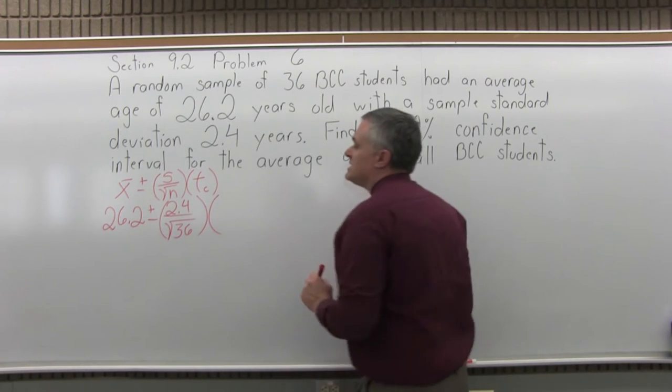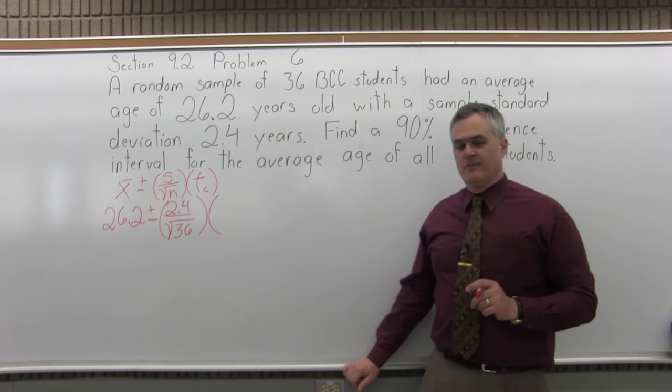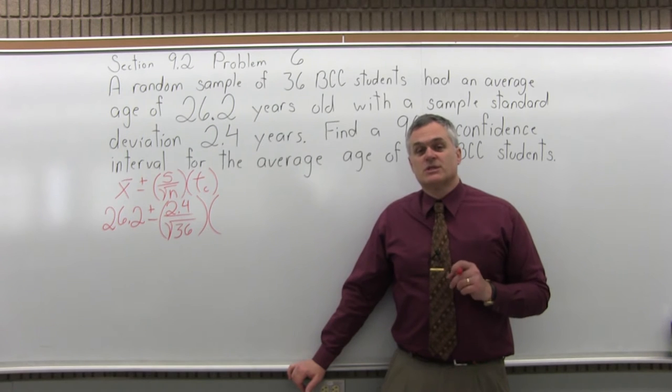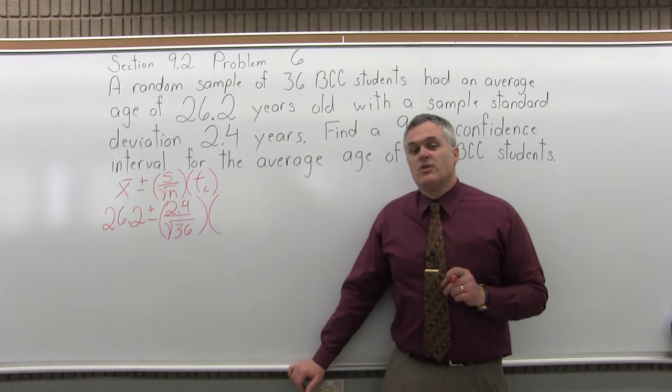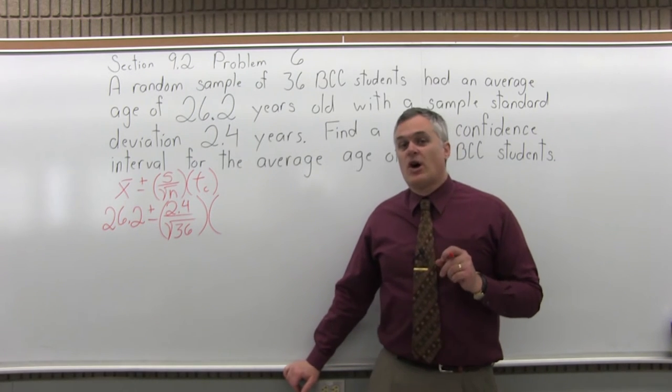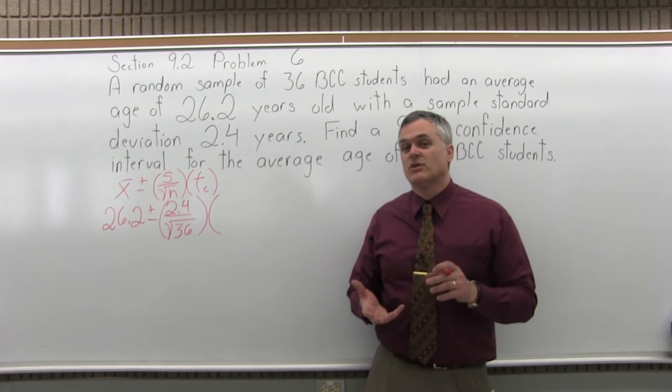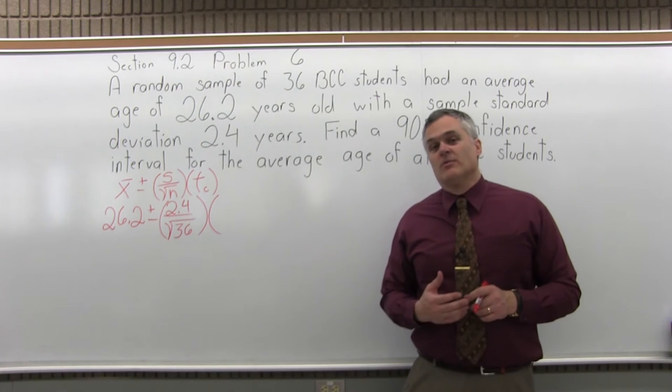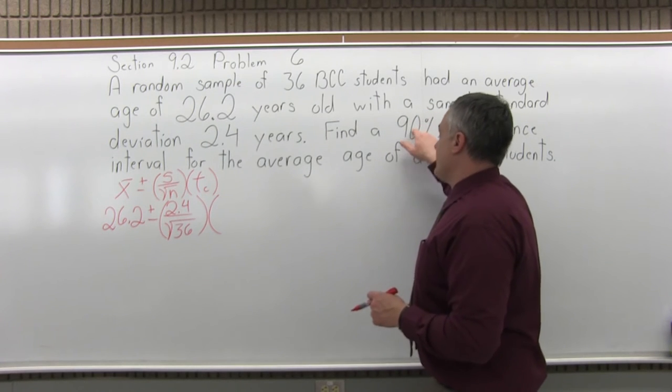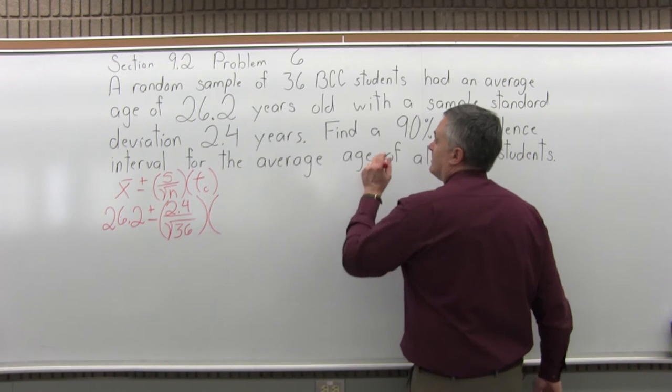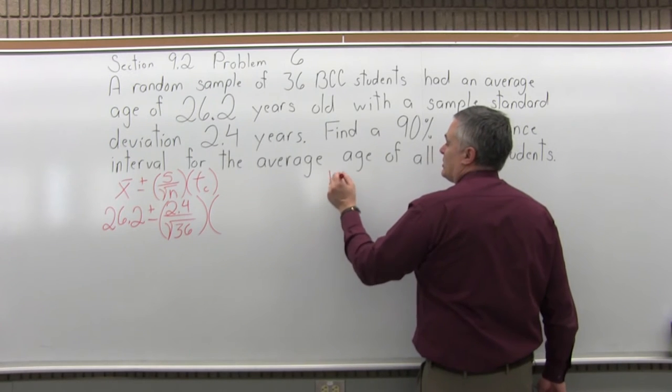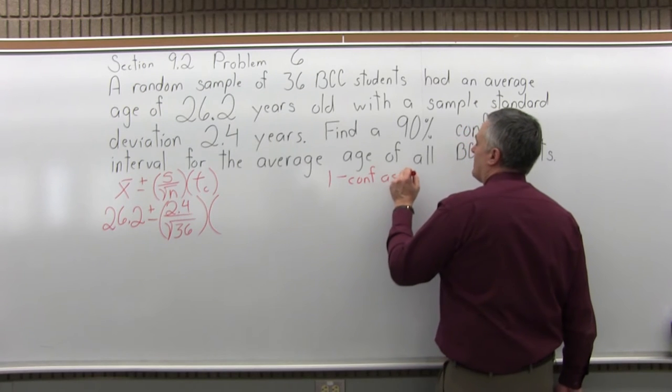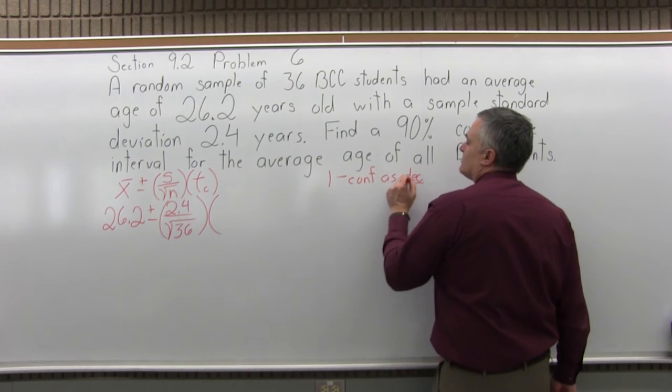And now T sub C is the confidence coefficient. To find the confidence coefficient, you need to use the student's T distribution, which is attached to the end of the homework. And you have to find where the correct column and correct row intersect with each other, and that will give you your value of your confidence coefficient.